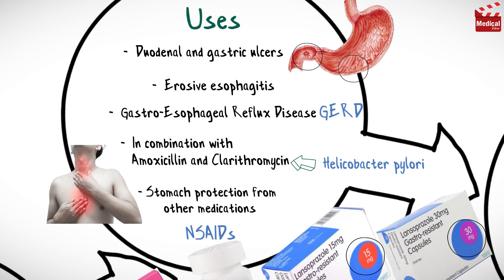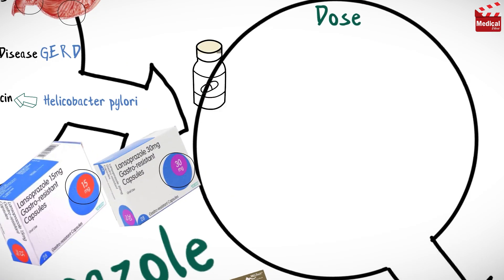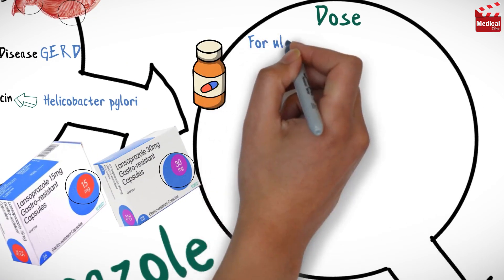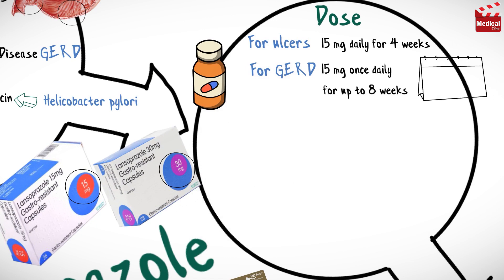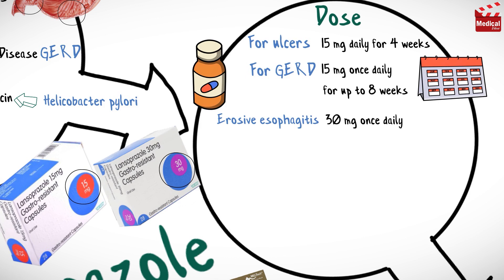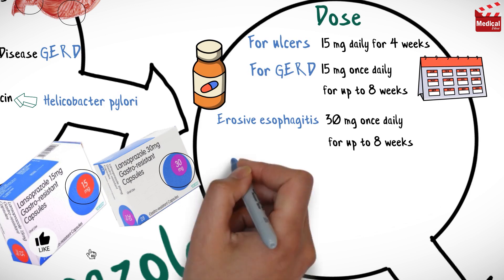The usual dosage for ulcers is 15 milligrams daily for 4 weeks. For GERD, 15 milligrams once daily for up to 8 weeks. For erosive esophagitis, 30 milligrams once daily for up to 8 weeks.